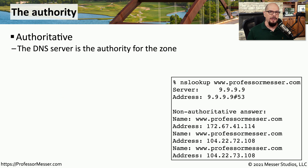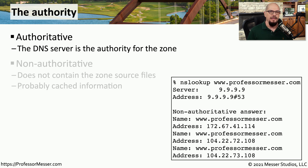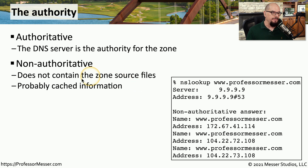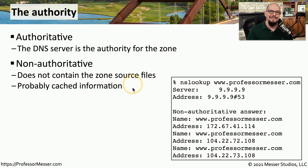Another important consideration when making DNS queries is the authority of the answer you're getting. If you're getting a response from the cache of a DNS server, you may notice that your request comes back as a non-authoritative answer. This means the answer we received did not come from the source files of the particular zone we're querying, and probably came from cached information. That doesn't necessarily mean the information is wrong, but if any changes were made to the original server, those changes may not be represented in the answer we received.